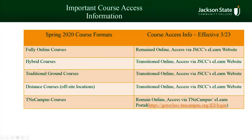Here's some important course access information for the spring 2020 course format. If you have a fully online course, your course will remain online. You can access it at the Jackson State Community College eLearn website. If you're enrolled in a hybrid course, your course has transitioned online and you can access your hybrid course through the eLearn website. If you're enrolled in a traditional course, your course has also transitioned to online and you can access it at the eLearn website.